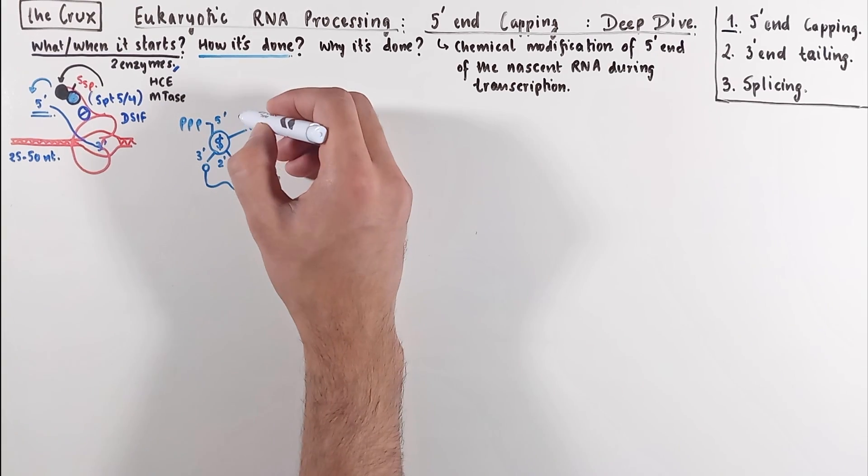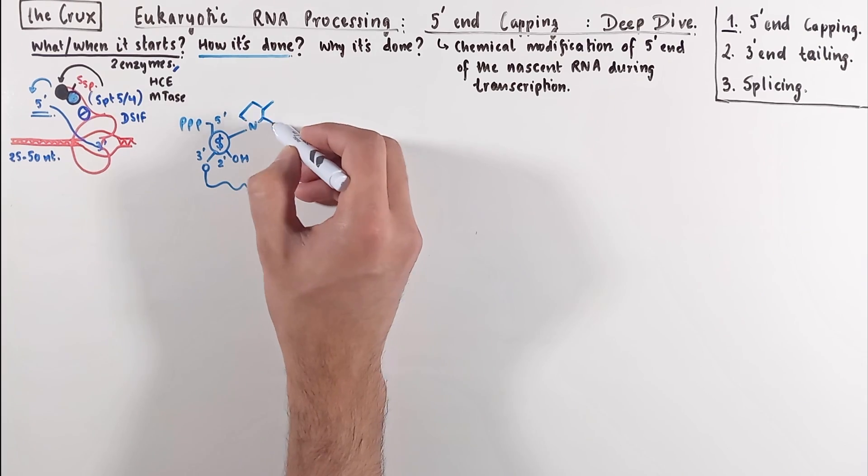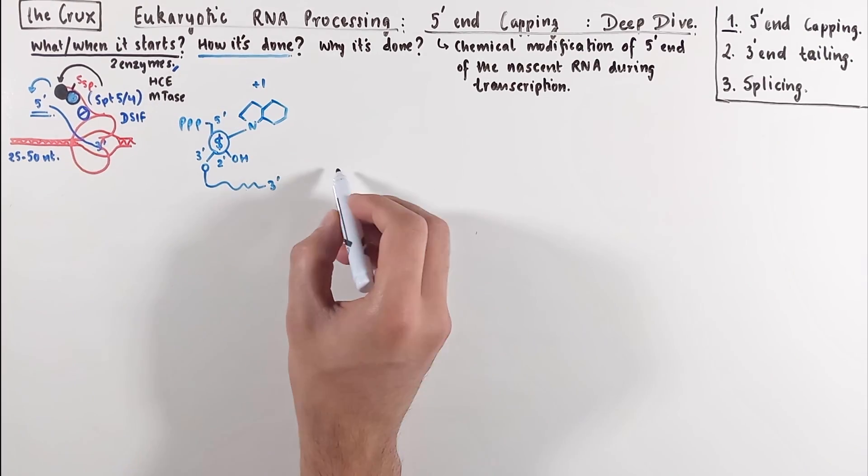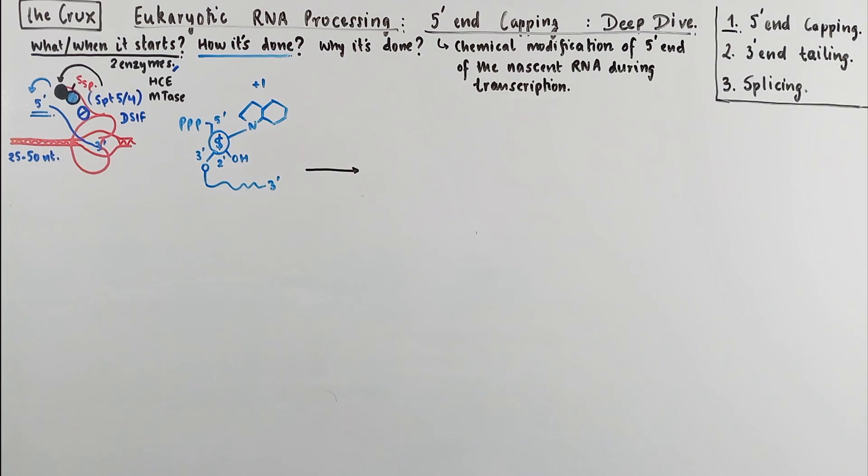The fifth carbon of the sugar has the triphosphate, and the first carbon has some nucleobase. It doesn't matter what this nucleobase is. And because this is the first base in the RNA, we'll call this the plus one site. So this is the five prime end of the RNA that needs to get capped.